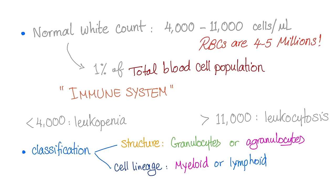The normal white blood cell count is between 4,000 and 11,000 white blood cells per microliter of blood. Red blood cells, by contrast, number in the millions. Less than 4,000 and you have leukopenia — penia means few or deficiency. More than 11,000 and you have leukocytosis. Classification of white blood cells: depending on cell lineage, you have myeloid or lymphoid; according to structure, you have granulocytes or agranulocytes. Granulocytes include neutrophils, eosinophils, and basophils; agranulocytes include monocytes and lymphocytes.